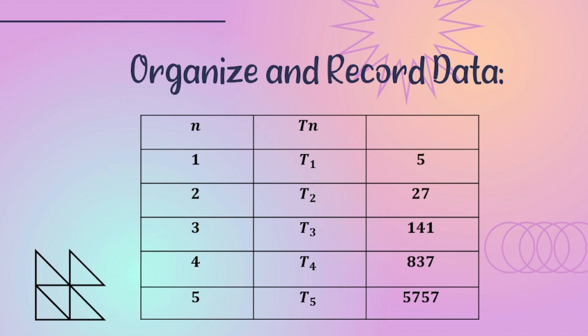If n is 1, then t sub 1 equals 5. If n is 2, t sub 2 equals 27. If n is 3, t sub 3 equals 141.